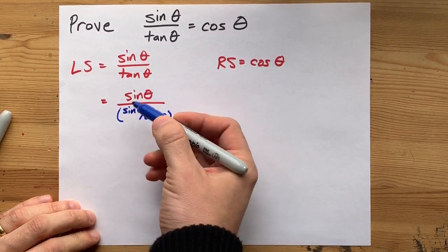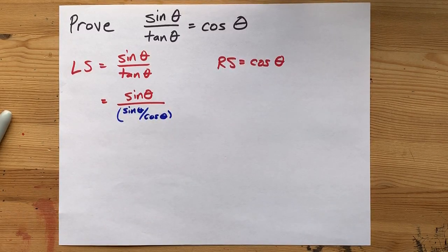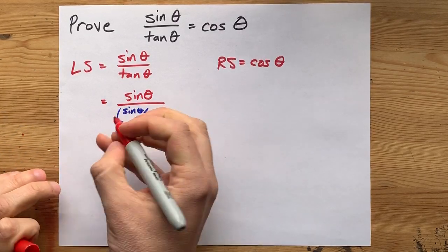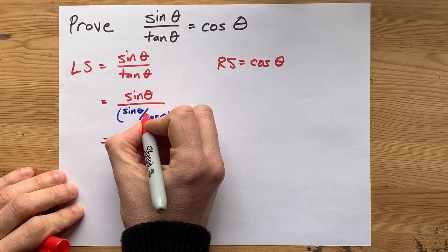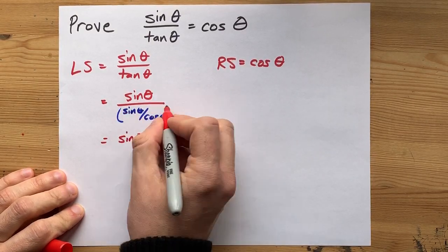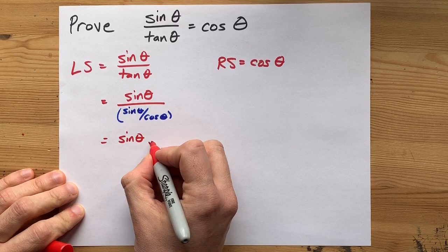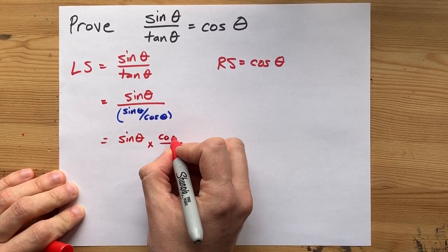And using that, we can manipulate this side of the equation. Now, what I actually have here is sine theta divided by a fraction, which means I can, instead of dividing by the fraction, multiply by its reciprocal.